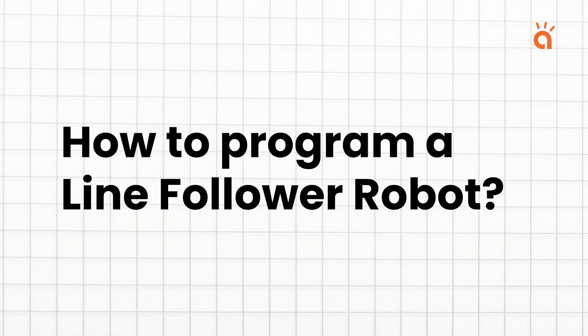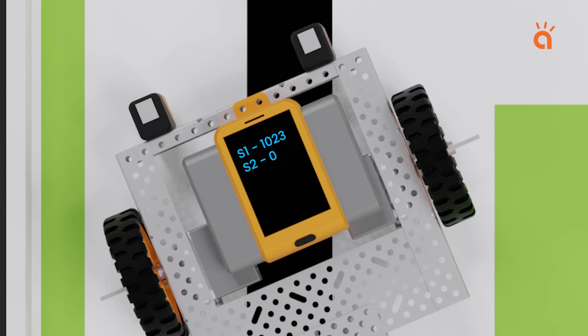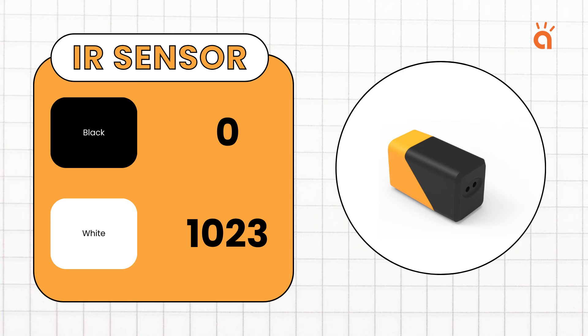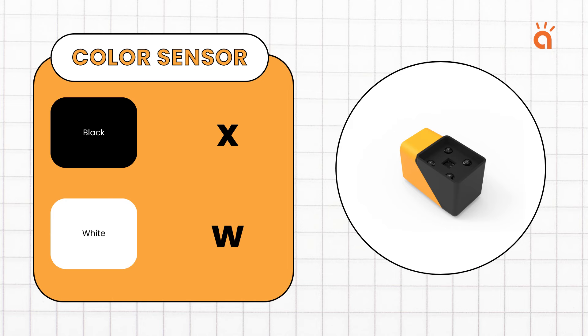How to program a line follower robot? To program the line follower robot, we need to first understand the values we are getting from our sensors. IR sensors return a value of 1023 on white and 0 on black. While color sensors return a character W on white and X on black. We can check this by printing the sensor values on the screen using this piece of code.